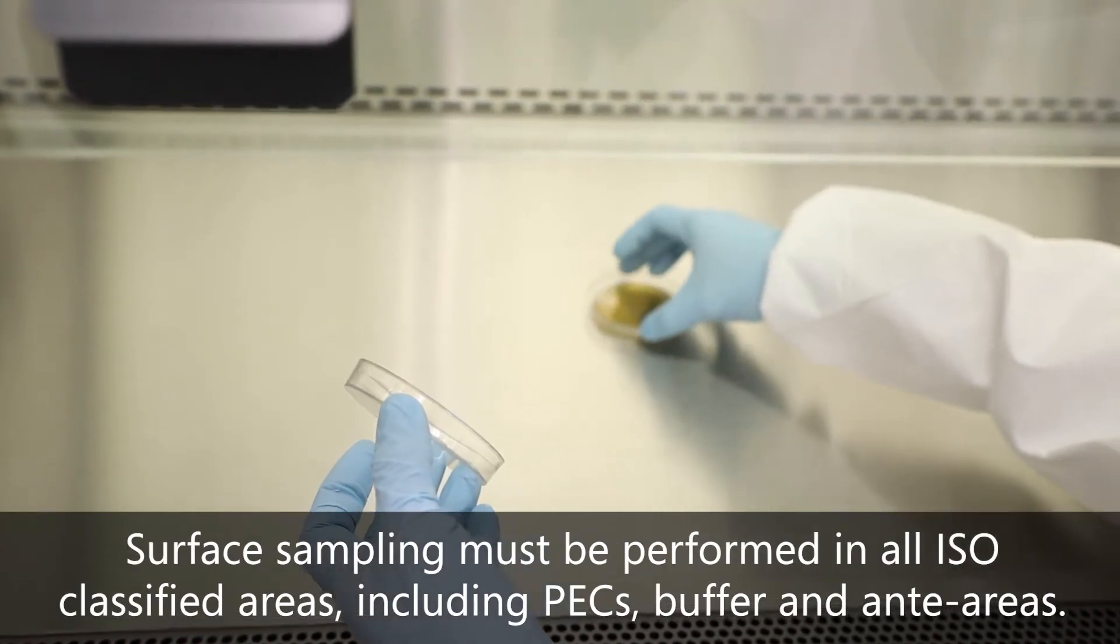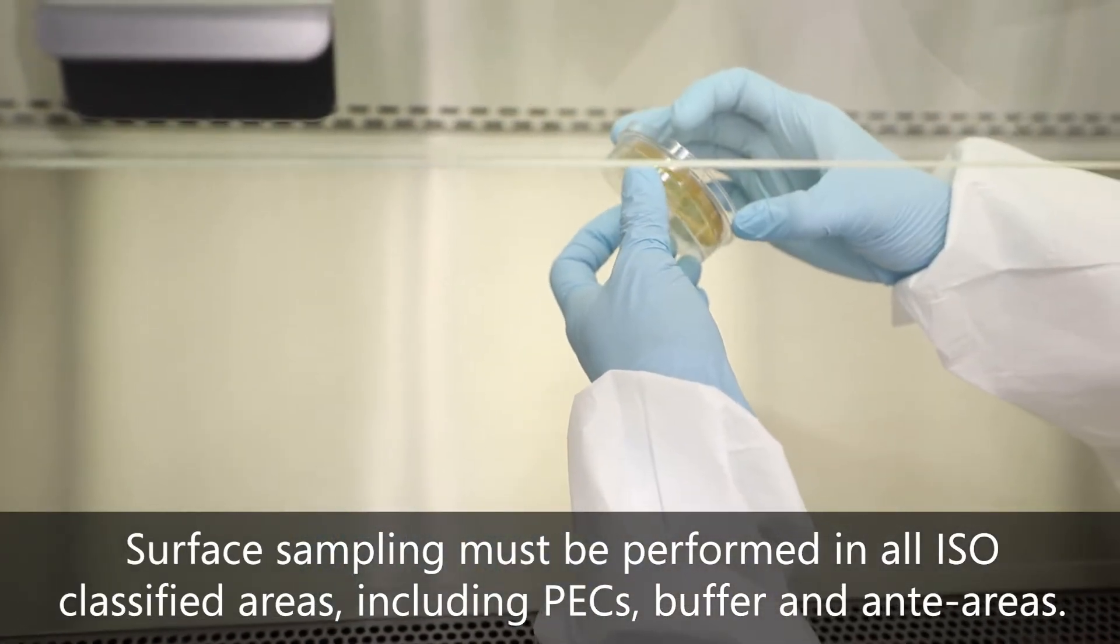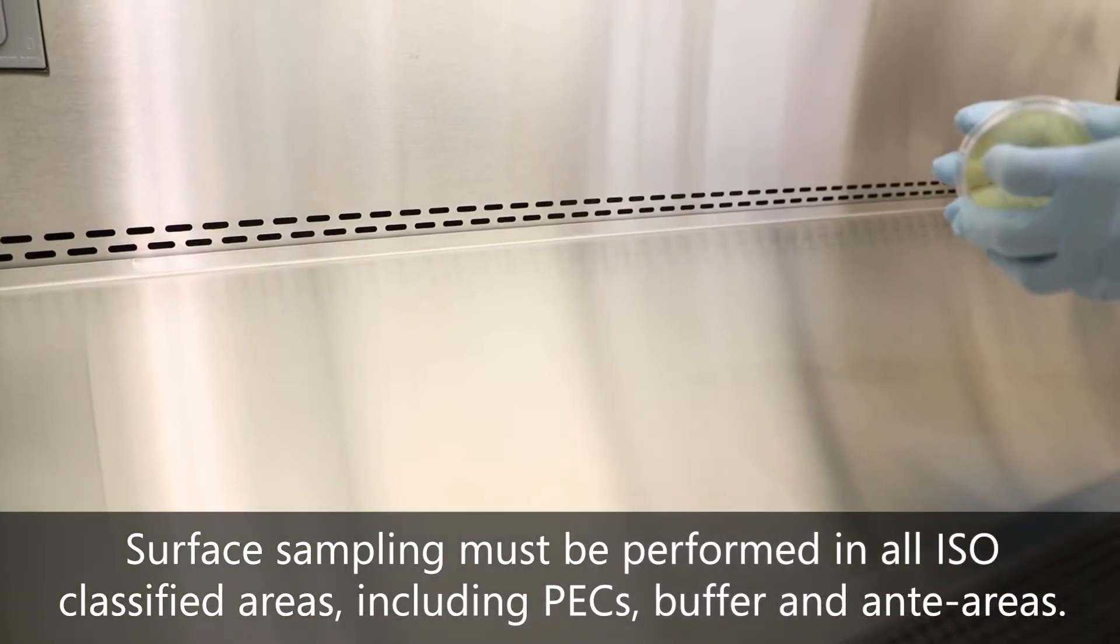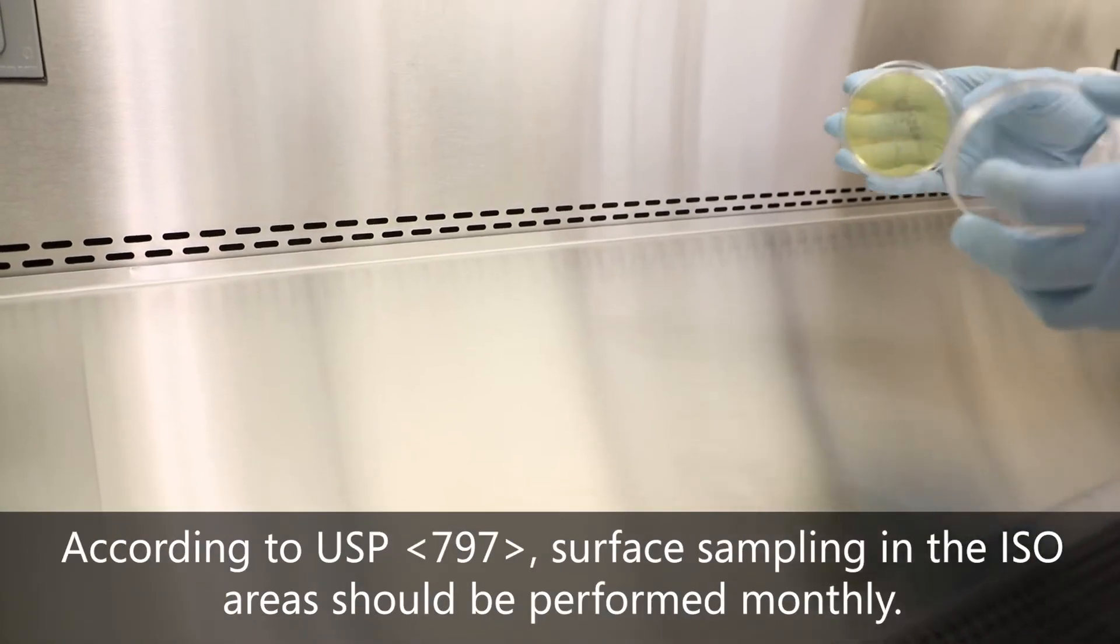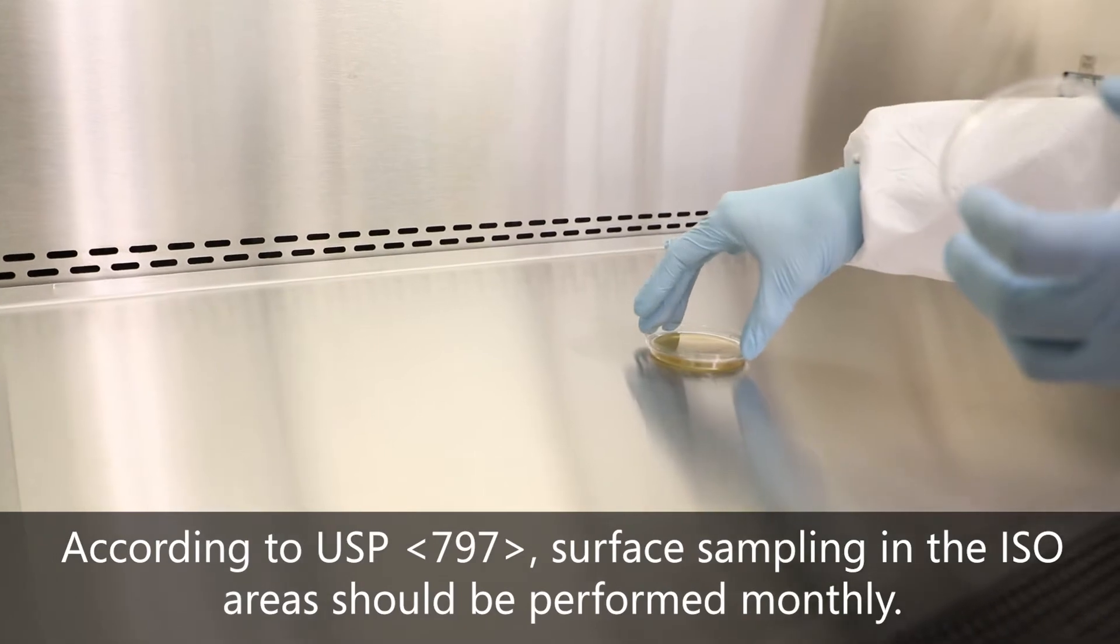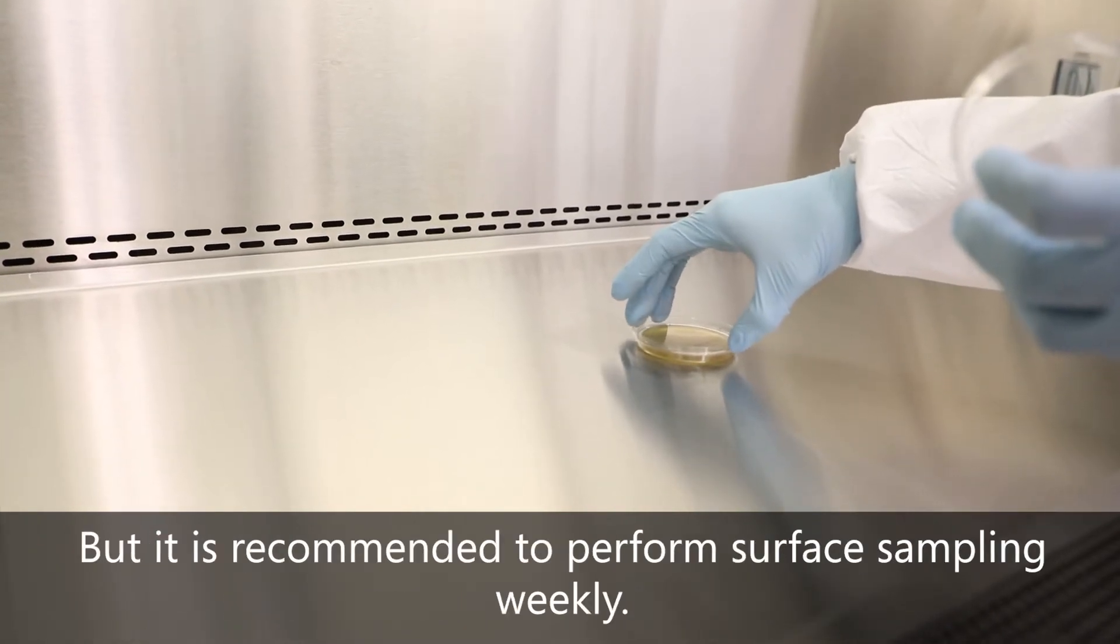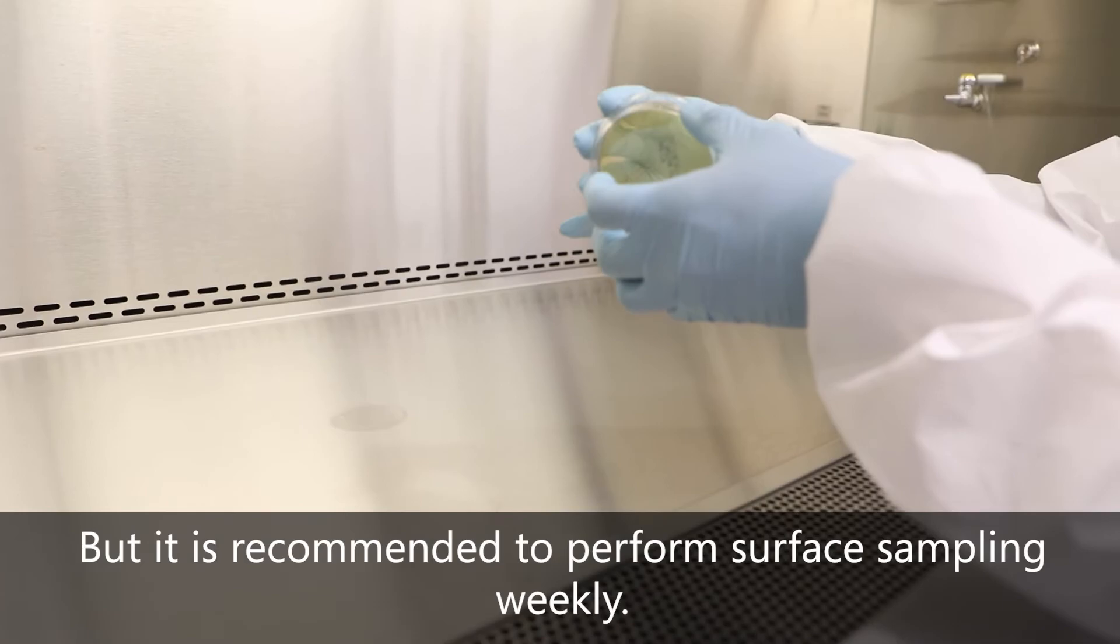Surface sampling must be performed in all ISO-classified areas, including PECs, buffer areas, and ante-areas. According to USP 797, surface sampling in the ISO areas should be performed monthly, but it is recommended to perform surface sampling weekly.